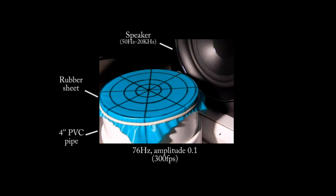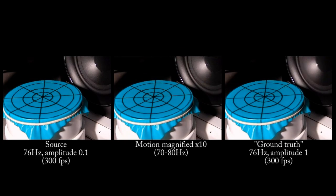In a second experiment, we mount a sheet of rubber on a PVC pipe to create a tense membrane. We send a waveform of our choosing through a loudspeaker to vibrate the air, which in turn vibrates the membrane. We found that the motions of the membrane magnified 10 times by our method look similar to a sequence where the amplitude of the waveform is 10 times larger.